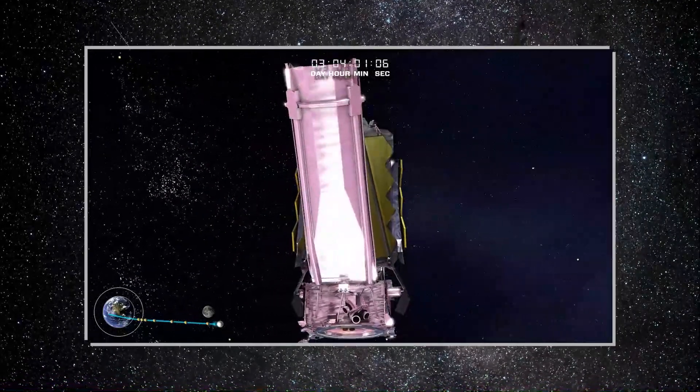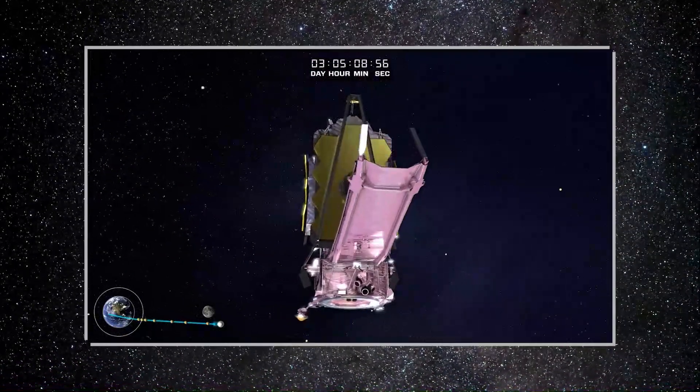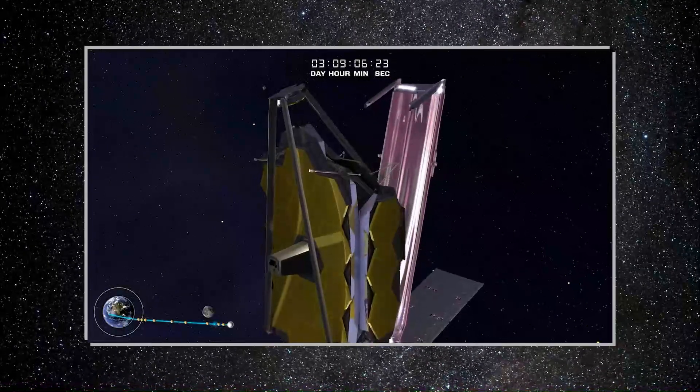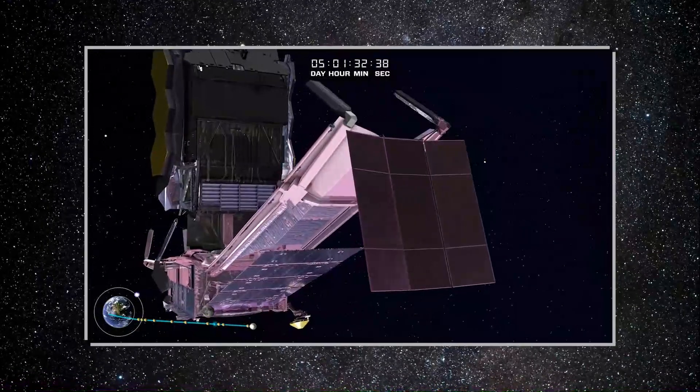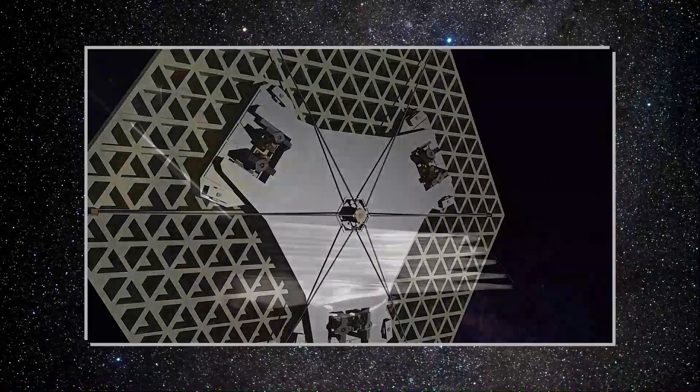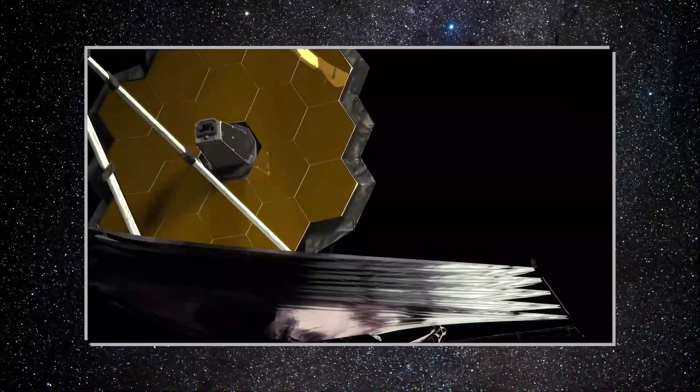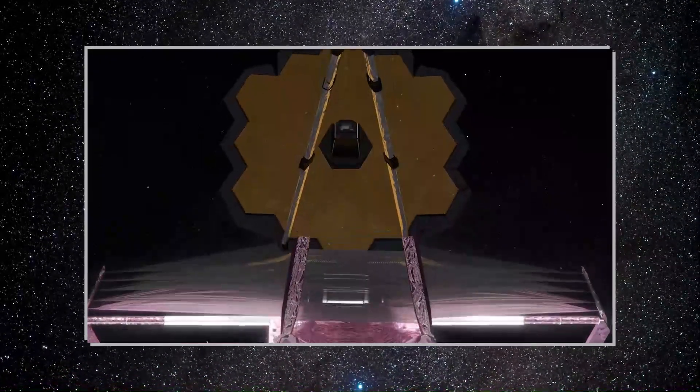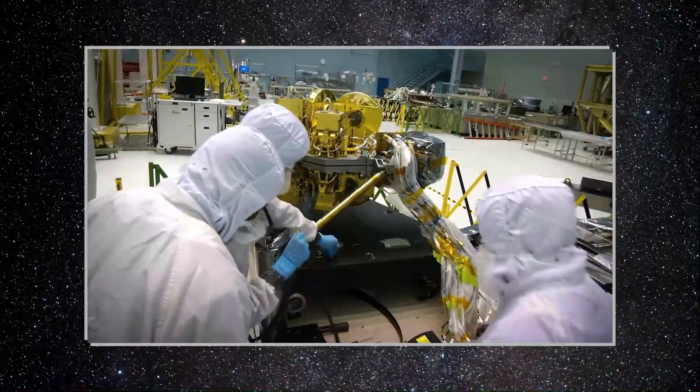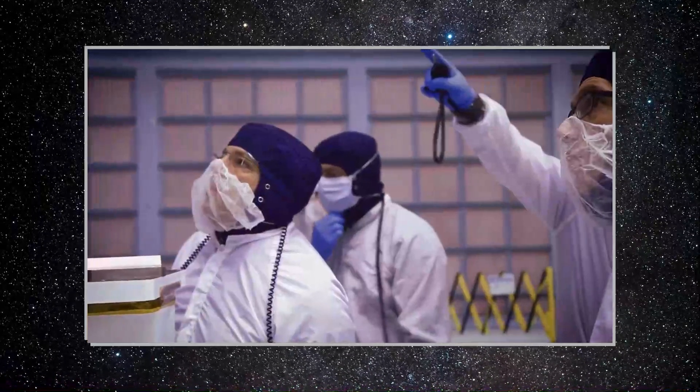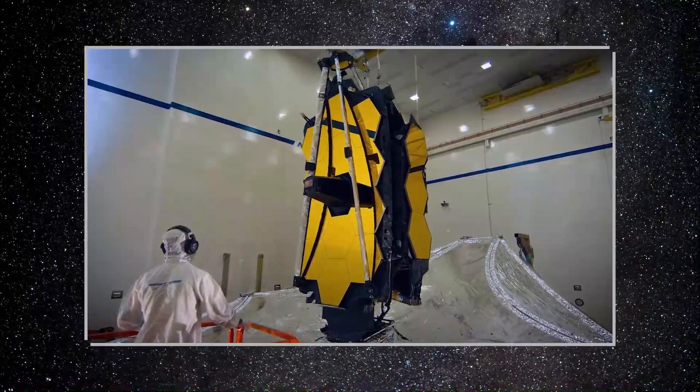While on its journey, the telescope must perform a difficult mechanical maneuver known as self-assembly. Because of its size, the telescope had to be launched folded up inside a rocket. Over several weeks, it must unfurl its various components from its mirrors to its sunshield. The telescope was initially expected to be operational for five to ten years, but NASA's current research suggests that it may be able to continue scientific operations for much longer.